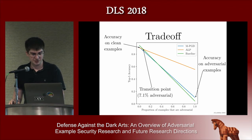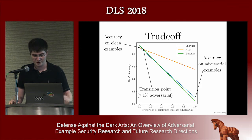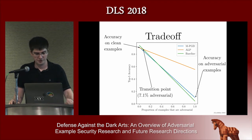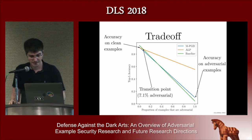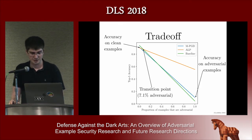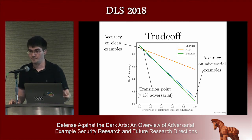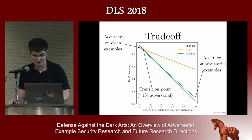We can also see what kind of test set we'd need to prefer the defense over the undefended baseline — specifically where the green and orange curves intersect, at about 7.1% adversarial examples. If fewer than this proportion are adversarial, we prefer the undefended baseline because there isn't enough adversarial pressure to justify the defense. To make the defense more widely usable, we can either improve accuracy on adversarial examples so we gain more by trading off clean accuracy, or increase accuracy on clean data so there isn't as much of a tradeoff in the first place.